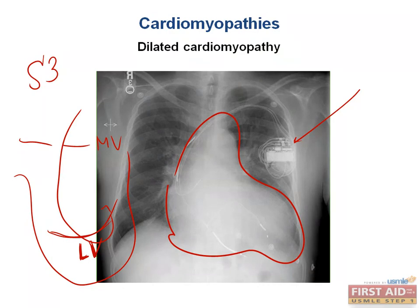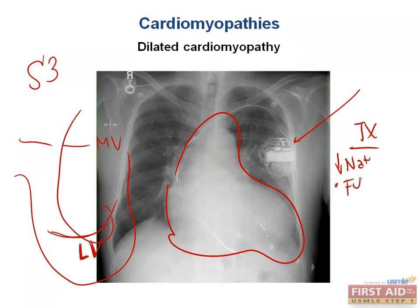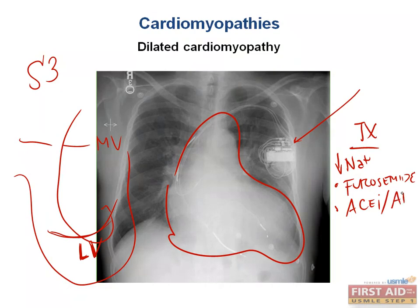Treatment should focus on increasing the heart's ability to contract — increasing inotropy — and decreasing the volume delivered to the chamber, because the problem is low contractility and volume overload. Great ways to initiate treatment include decreasing sodium intake, since water follows sodium. Decreasing sodium decreases intravascular volume. We give diuretics such as the loop diuretic furosemide, which inhibits the sodium-potassium-chloride co-transporter in the ascending loop of Henle.